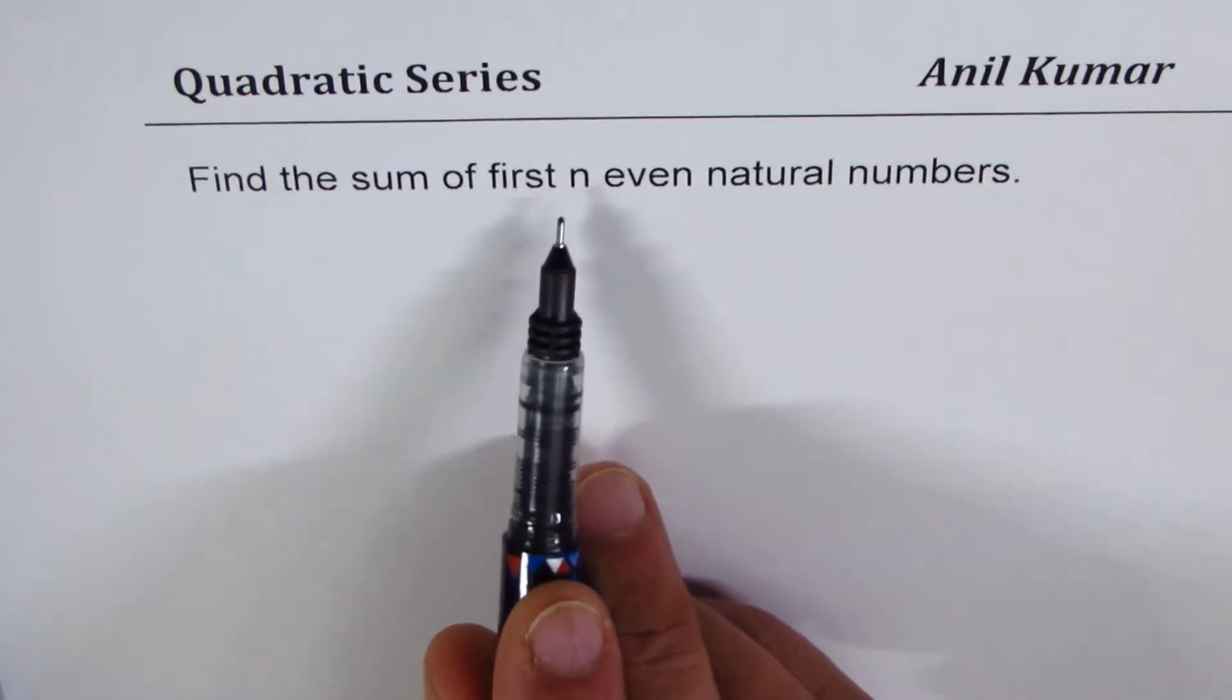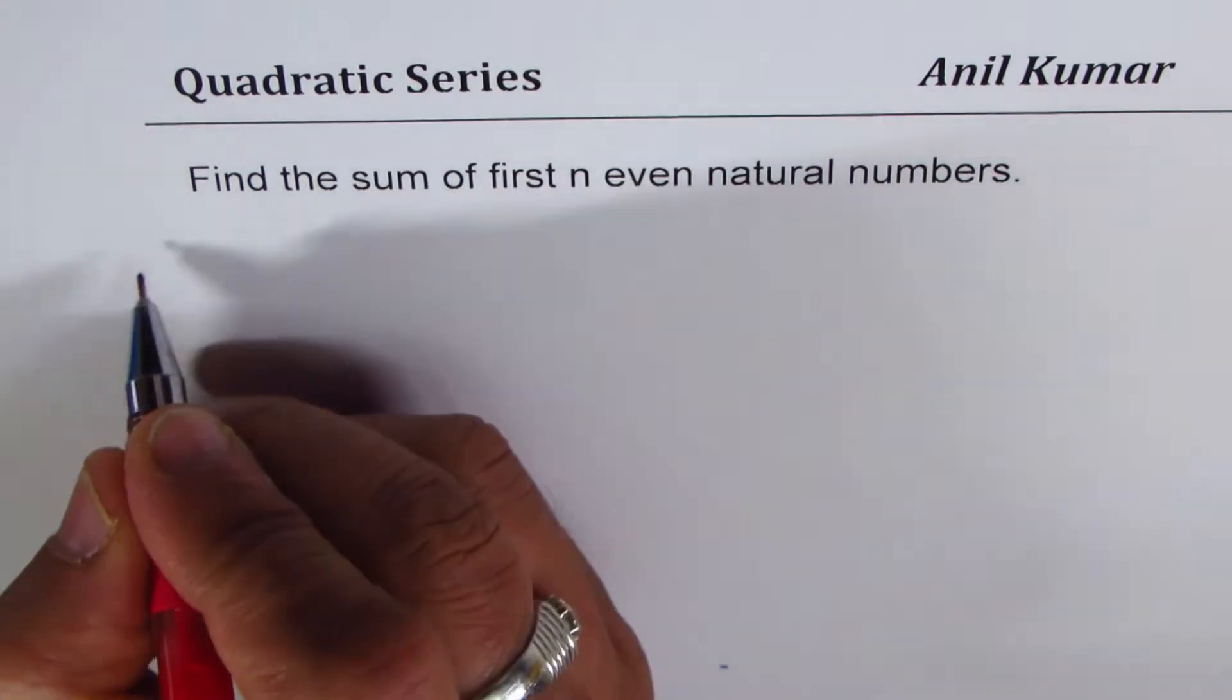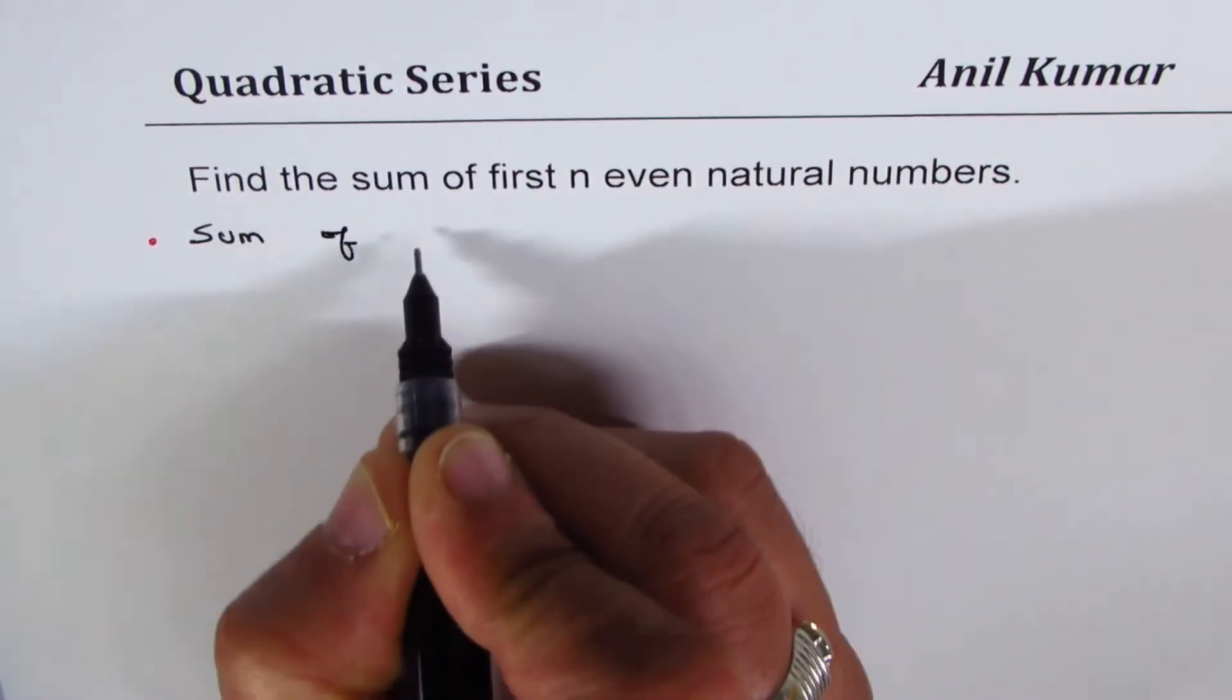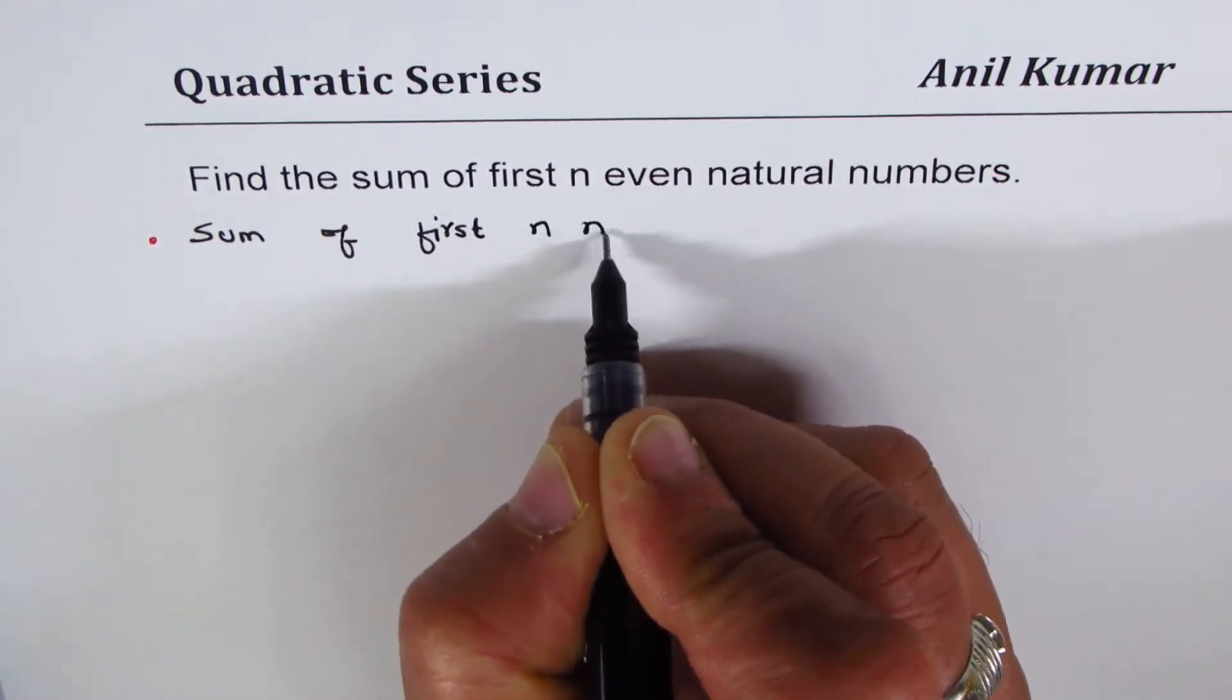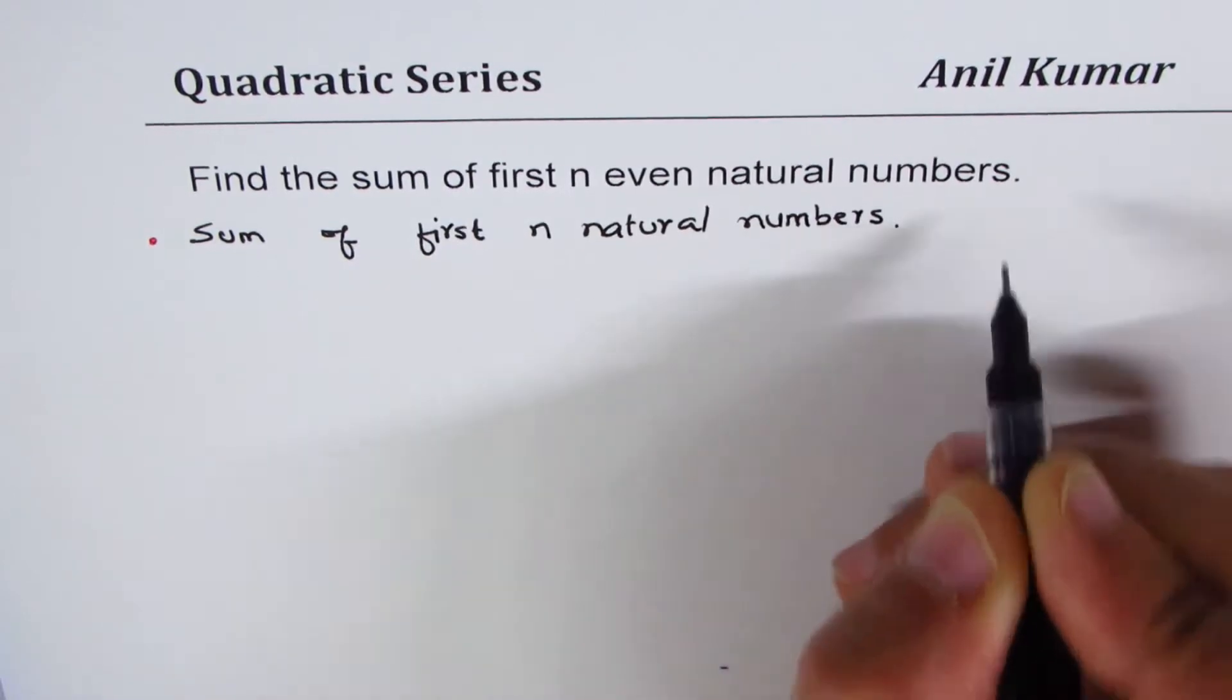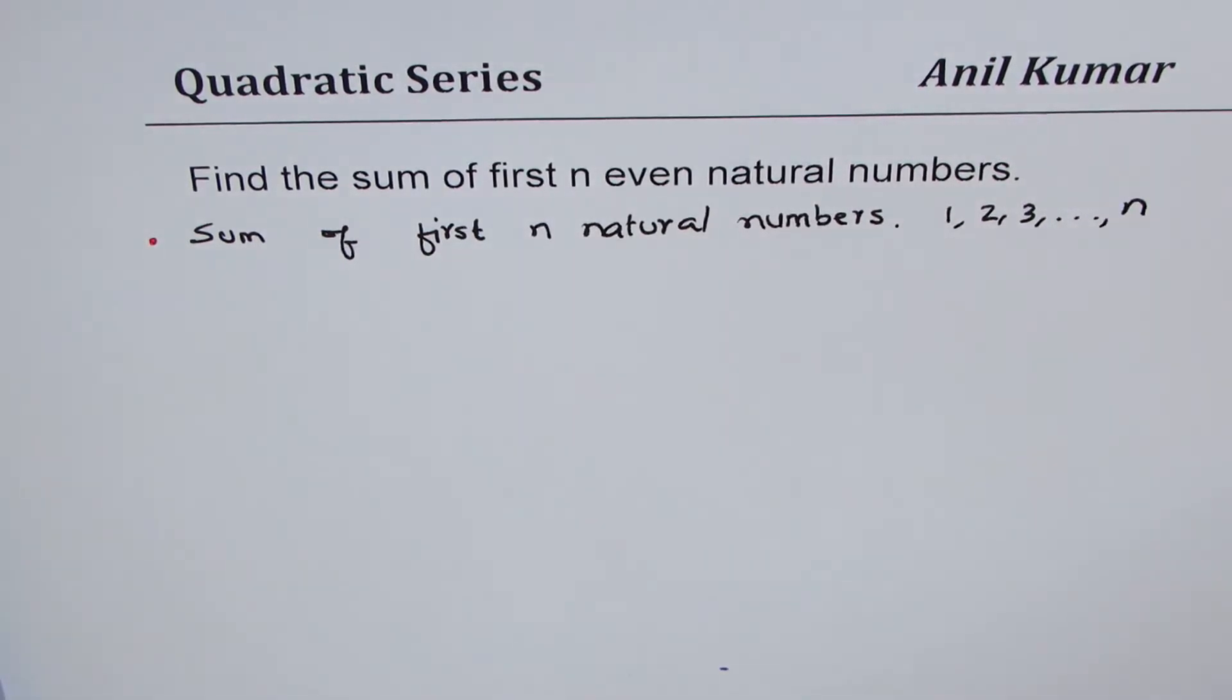We want to find the sum of first n even natural numbers. So, I'll split this into two parts. First part, I will find sum of first n natural numbers. Natural numbers, as you know, means one, two, three, and so on. And we'll go up to n. So, that is what we are looking into.